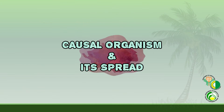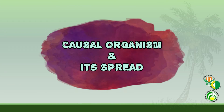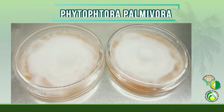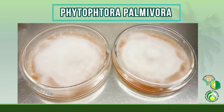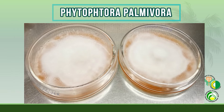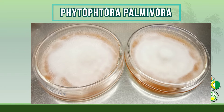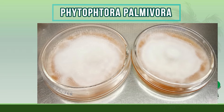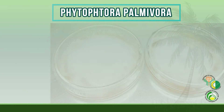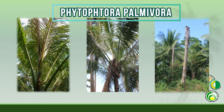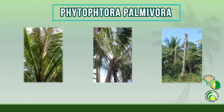Leaving only mature leaves in the lower whorls of the crown. Causal Organism and Its Spread: The soil-borne water mold Phytophthora palmivora is the most commonly found organism associated with coconut bud rot disease.